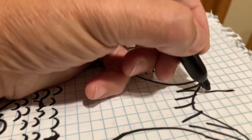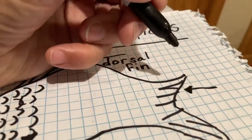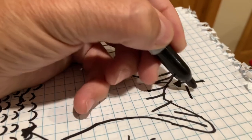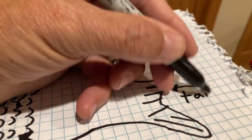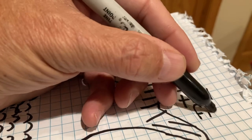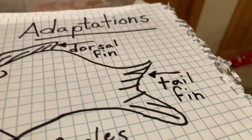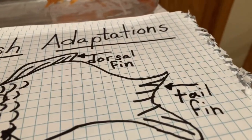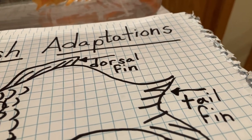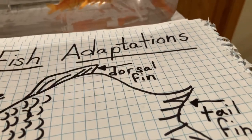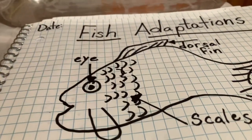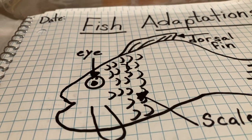Back here we have a tail fin — label that 'tail fin.' It gives the fish power to actually push forward.